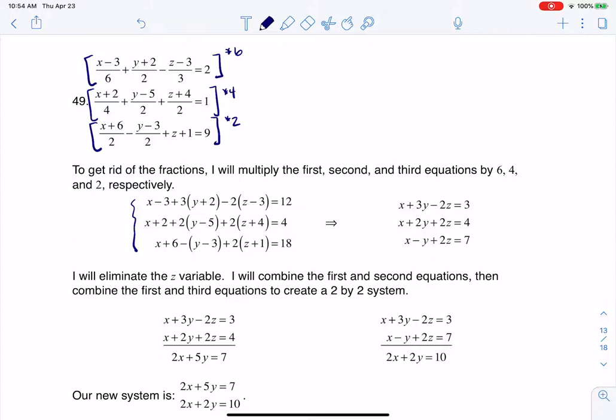Just since we love fractions so much, let me go through the first distribution and talk about this. So if I wanted to distribute this 6 to these three terms, or actually the fourth one, I've got to get it on the other side of the equals. This would be 6 times x minus 3 over 6, plus 6 times y plus 2 over 2, minus 6 times z minus 3 over 3, and that would be equal to 12.